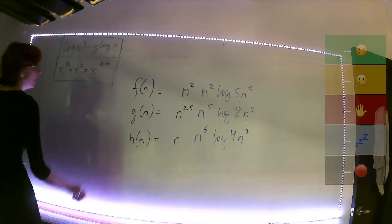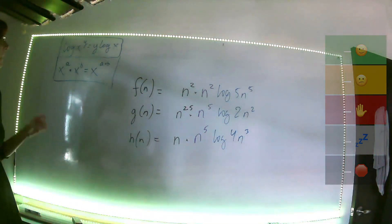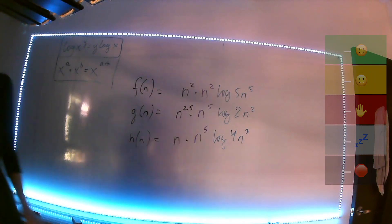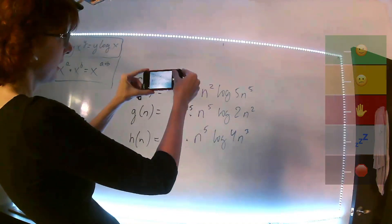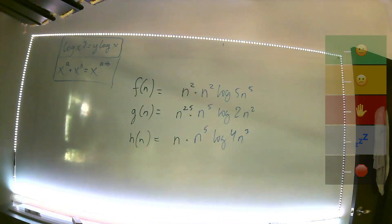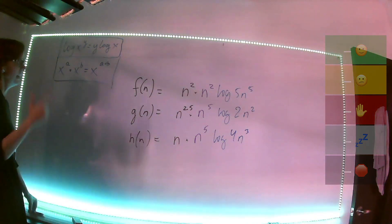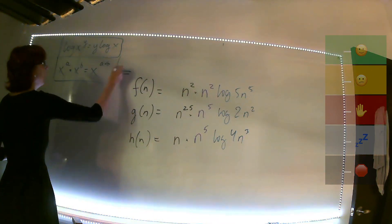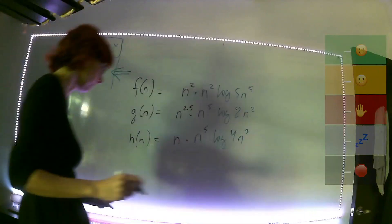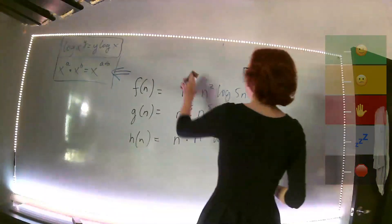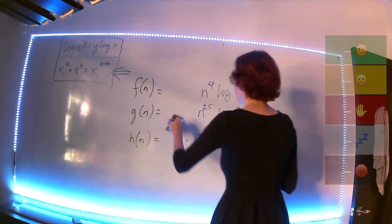Estos son implícitamente productos. Hemos aplicado dos reglas: primero las raíces se hicieron exponentes medios, luego esos medios se multiplicaron con los exponentes que estaban afuera. Ahora voy a aplicar la regla que si tengo x elevado a una cosa multiplicando x elevado a otra cosa con la misma base, las potencias se suman. Entonces: 2 más 2 es 4, 2.5 más 5 es 7.5, y 1 más 5 es 6. He limpiado bastante la situación.